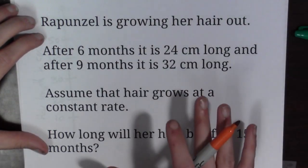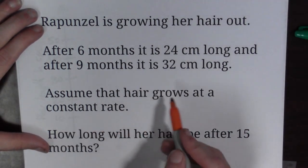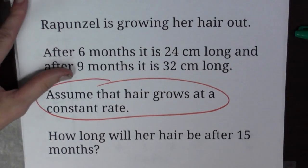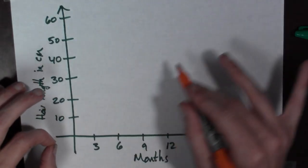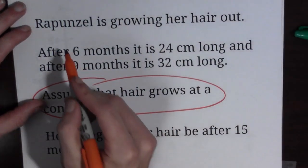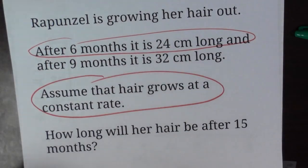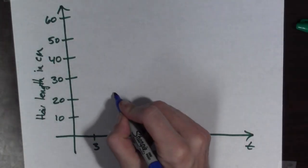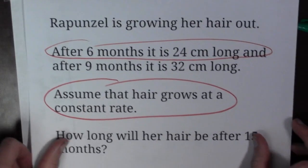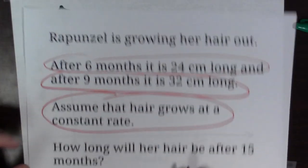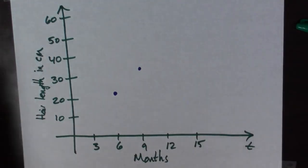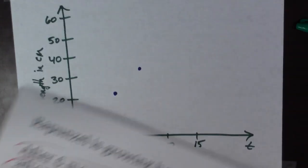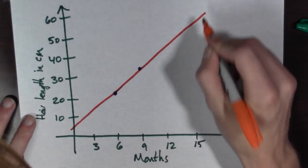Rapunzel is growing her hair out. After six months, it is 24 centimeters long and after nine months, it is 32 centimeters long. Assume that hair grows at a constant rate. How long will her hair be after 15 months? While you might be tempted to try to solve this problem using your handy calculator, that's the wrong thing to do. The right thing to do is to get out your pen and paper and write stuff down. Then you have to think about it.